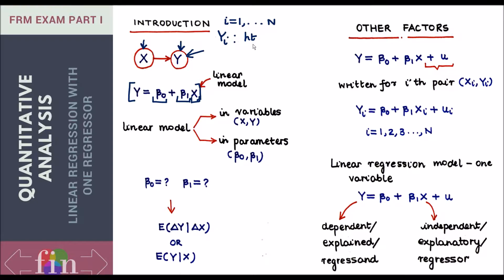There are many factors which you can intuitively think of that can cause this variation in height. Heights of all students in a class are not the same — that means there is some sort of variation. The most intuitive factor that would come to your mind to explain the height of various students — why is the first student tall, why is the second average, why is the third short — is the height of one of the parents. Let's pick the height of the father.